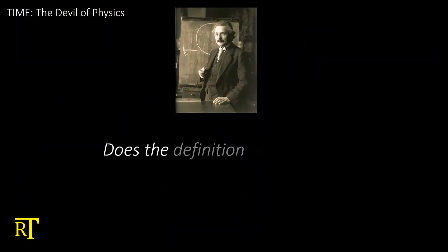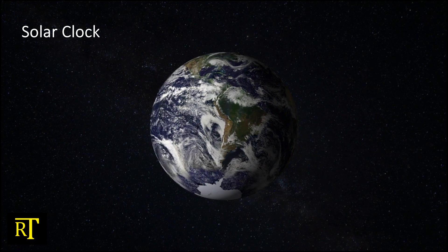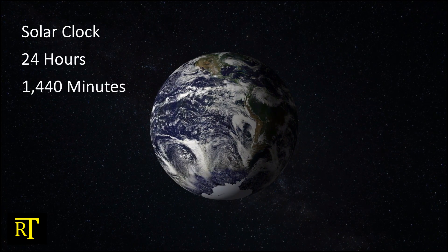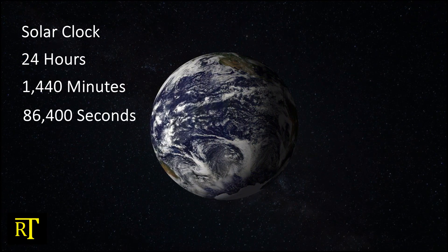But before we deal with the relativistic considerations, we have a more basic question in front of us. Does the definition of a second change every day? Yes, due to Earth's rotation slowing down. Remember in the early days of science, we took Earth's rotation as the reference point for defining the clock. We call it the solar clock. One rotation is 24 hours, 1,440 minutes, 86,400 seconds.